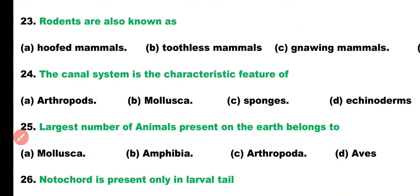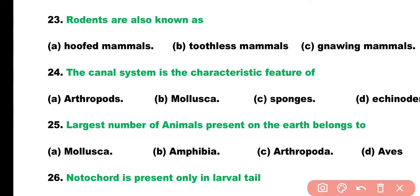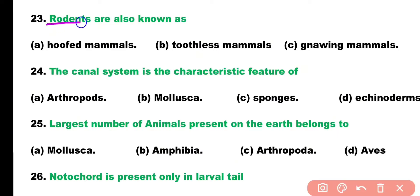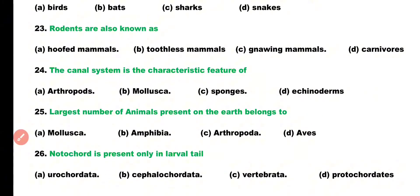Question number 23. Rodents are also known as: hoofed mammals, toothless mammals, gnawing mammals, or carnivores? Correct answer is Option 3. The rodents are called gnawing mammals.